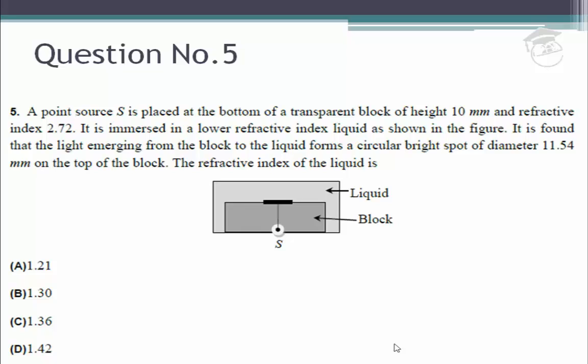We are given a point source S placed at the bottom of a transparent block. This is a light source S at the bottom of a transparent block which is kept inside a liquid.